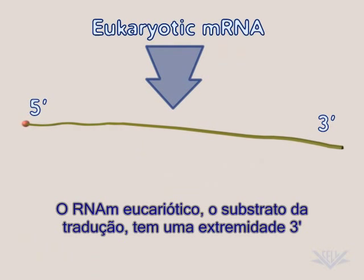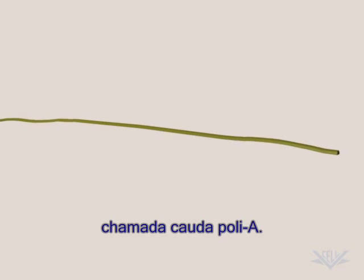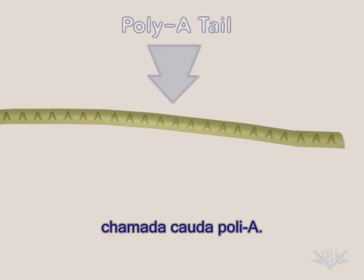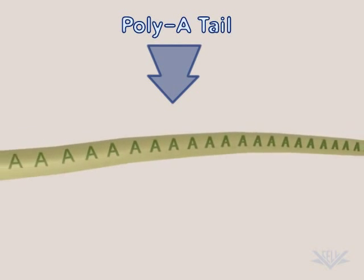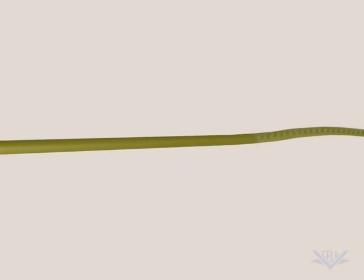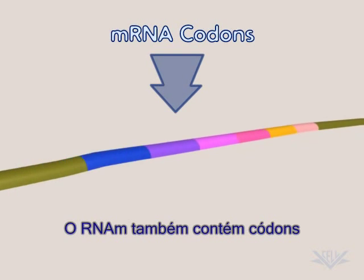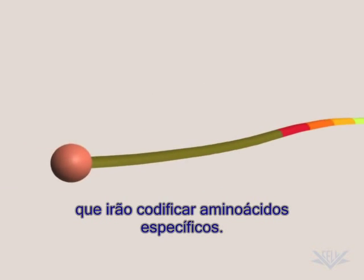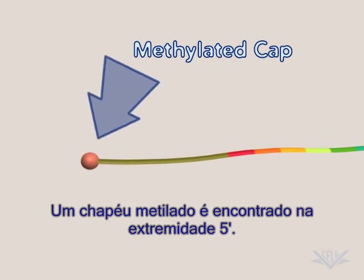Eukaryotic mRNA, the substrate for translation, has a unique 3' end called the polyA tail. mRNA also contains codons that will encode for specific amino acids. A methylated cap is found at the 5' end.